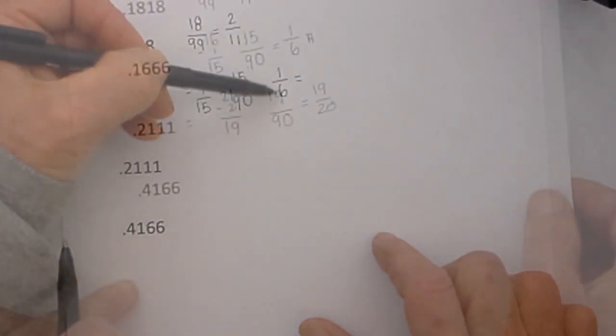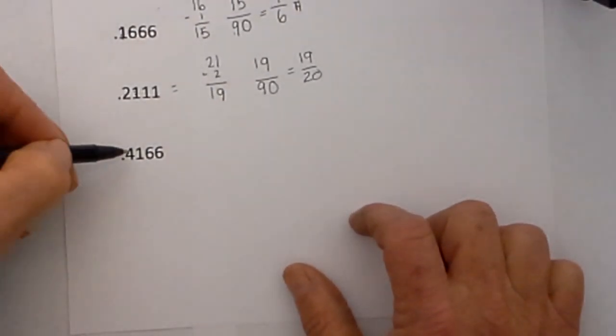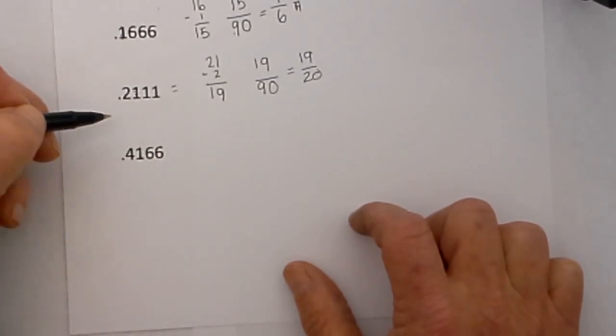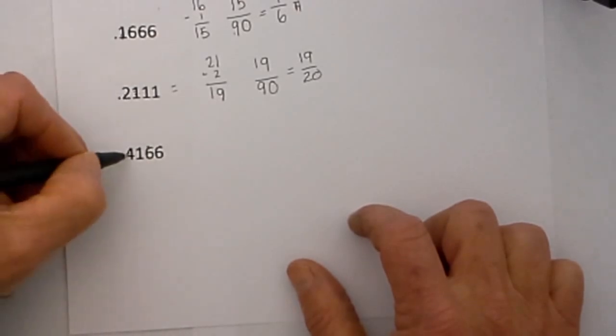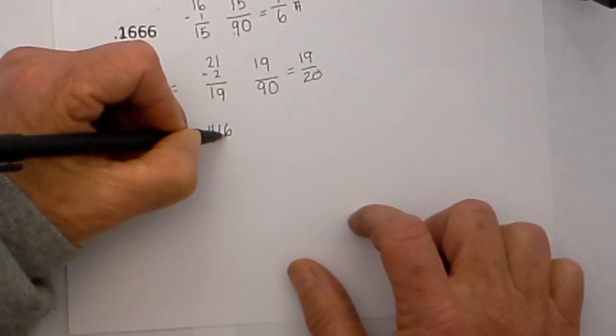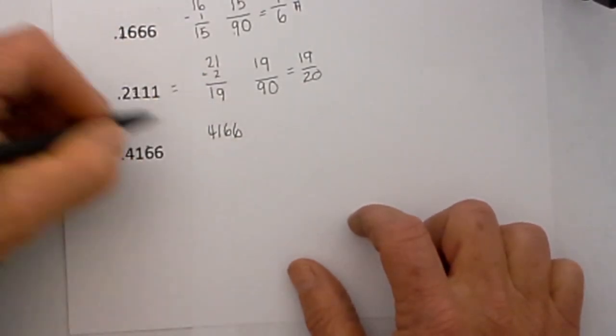Now the one exception that I have found with this is, and be careful here, say we have a number .4166. You may be tempted with this to write the repeating fraction as 416 but in fact since you have two non-repeating numbers you need to have at least two numbers in the repeating section. So instead of writing 416 I would write 4166 so you have two non-repeating and two repeating.